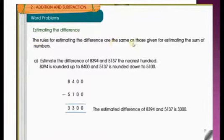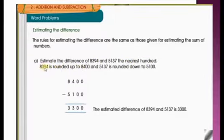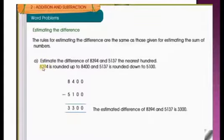The rules for estimating the difference are the same as those given for estimating the sum of numbers. To estimate the difference of 8,394 and 5,135 to the nearest hundreds — 8,394: is 394 nearest to 300 or 400 children? Yes, it is nearest to 400. So we round up to 8,400.